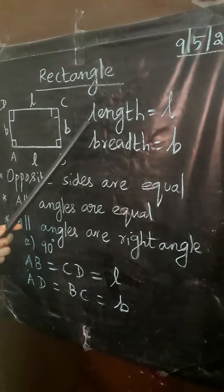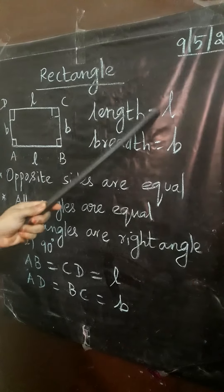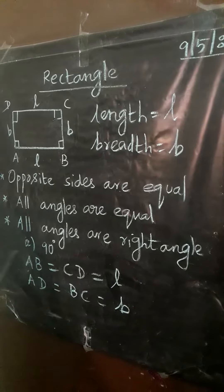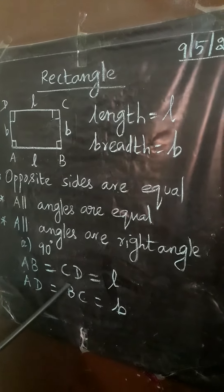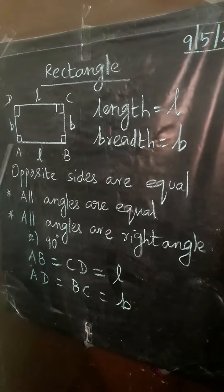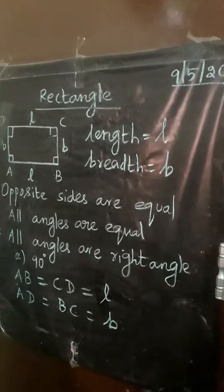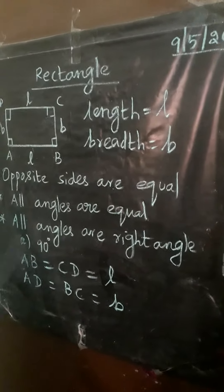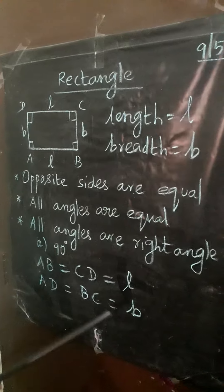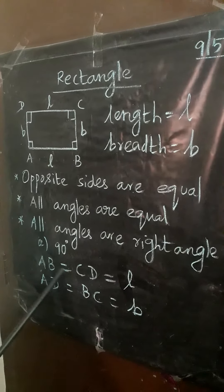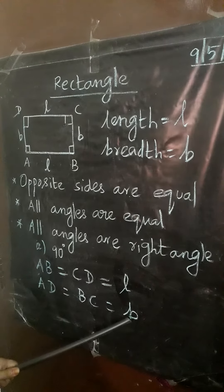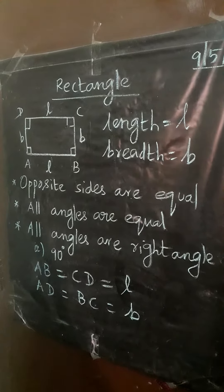So length is L, breadth is B. AB is equal to CD — opposite sides are equal. AD is equal to BC. So AB and CD equal to L, and AD and BC equal to B.